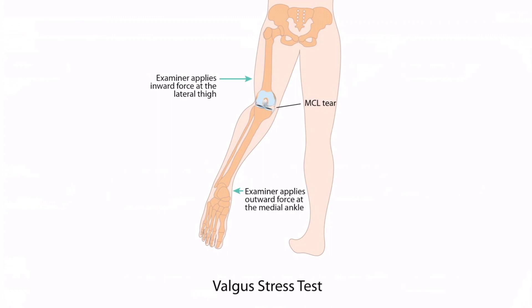This is an image of the valgus stress test. Notice that the examiner places one hand on the lateral thigh and applies an inward force, as shown by this arrow. This type of force is also known as a valgus force, hence the name valgus stress test. The examiner simultaneously applies an outward force at the medial ankle. This applies stress to the MCL, so if the MCL is torn, then the lower leg will abduct more than expected.